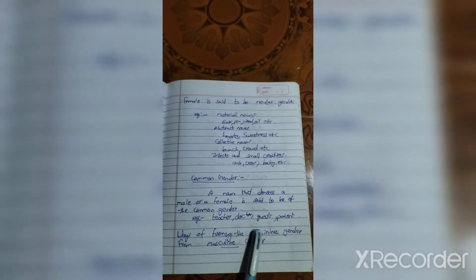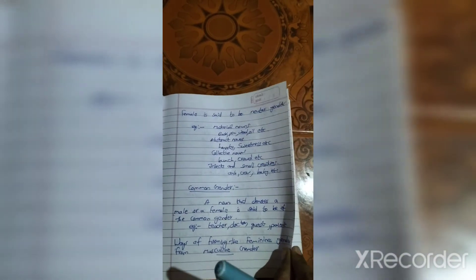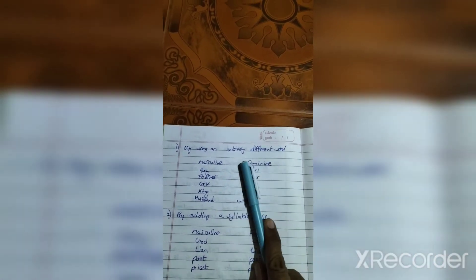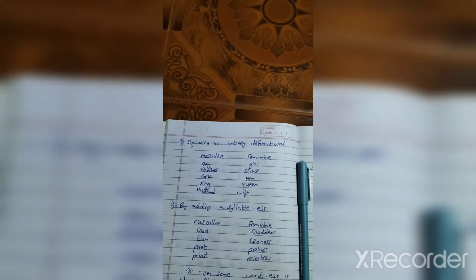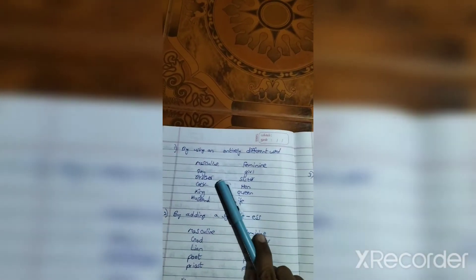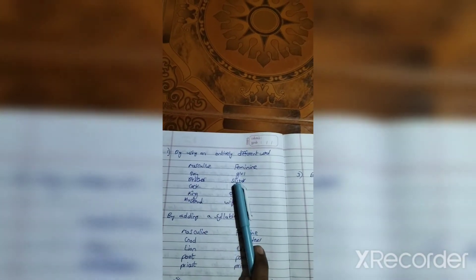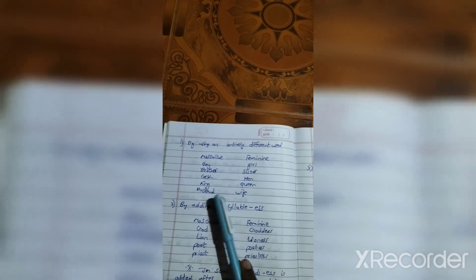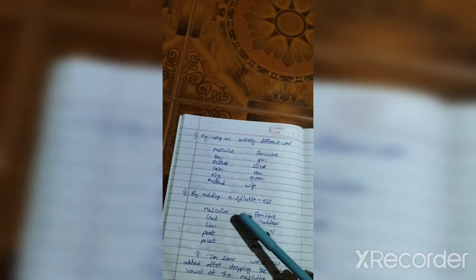Ways of forming the feminine gender from masculine gender. By using an entirely different word. Examples: boy-girl, brother-sister, king-wife.